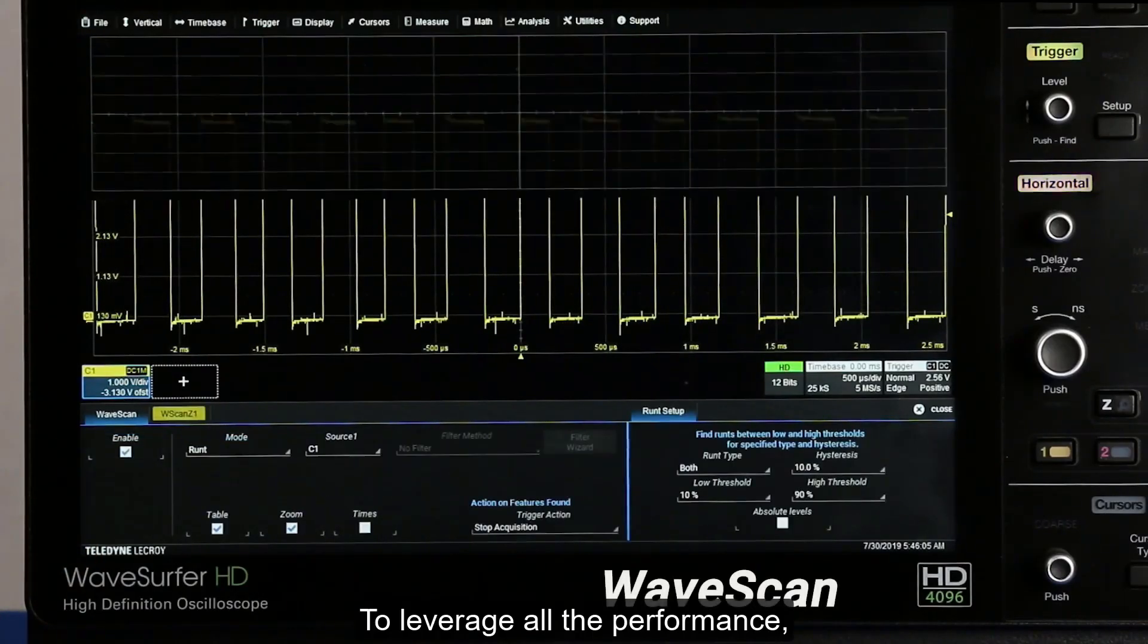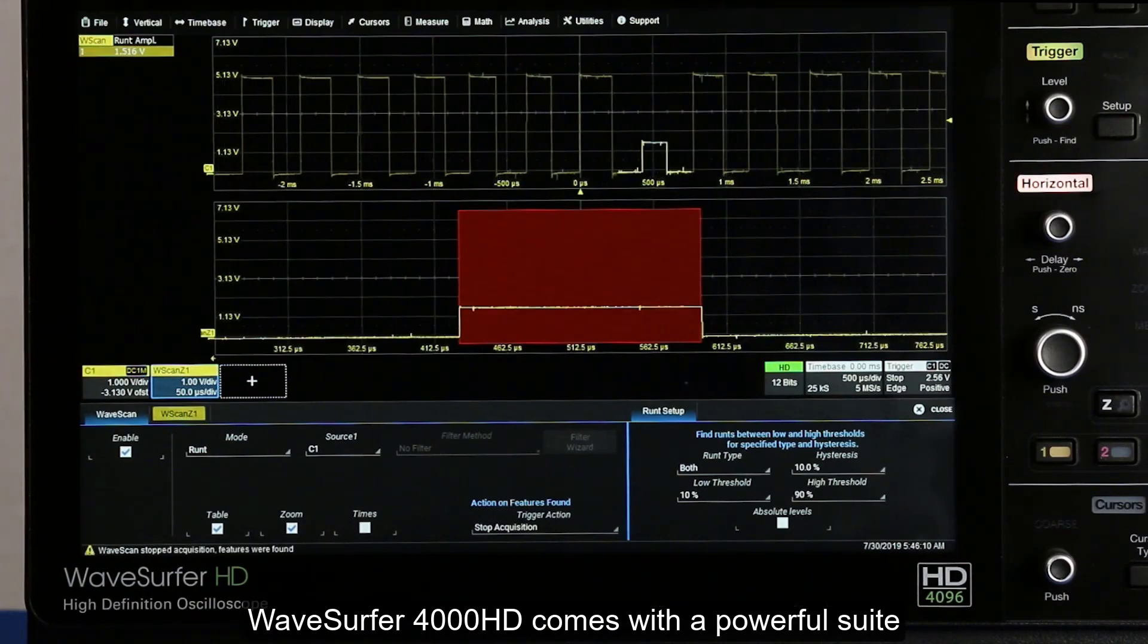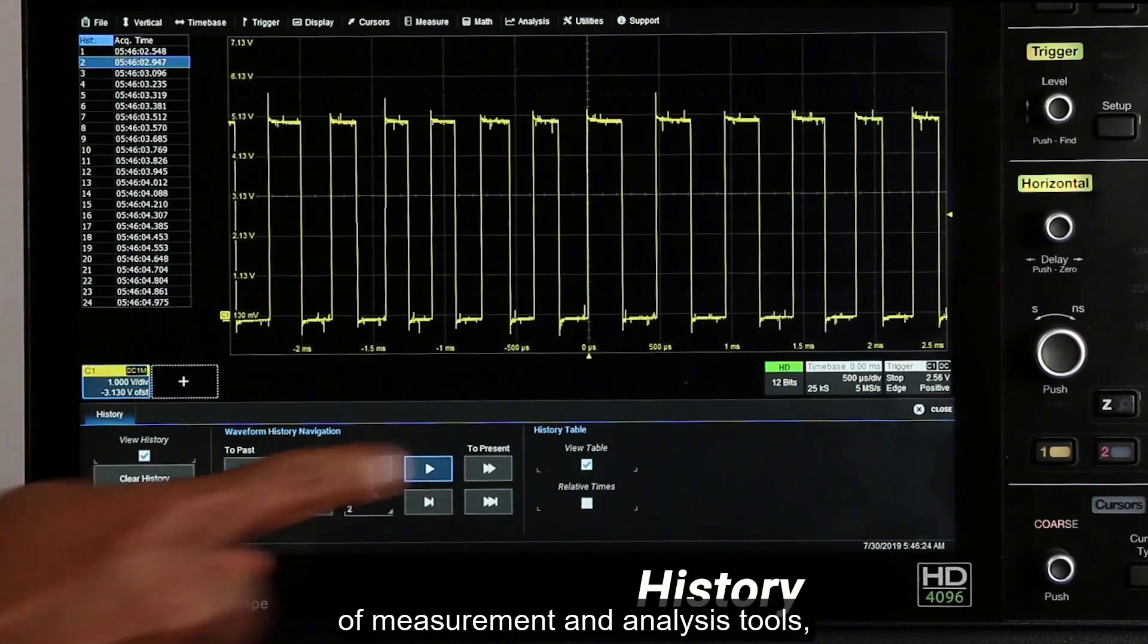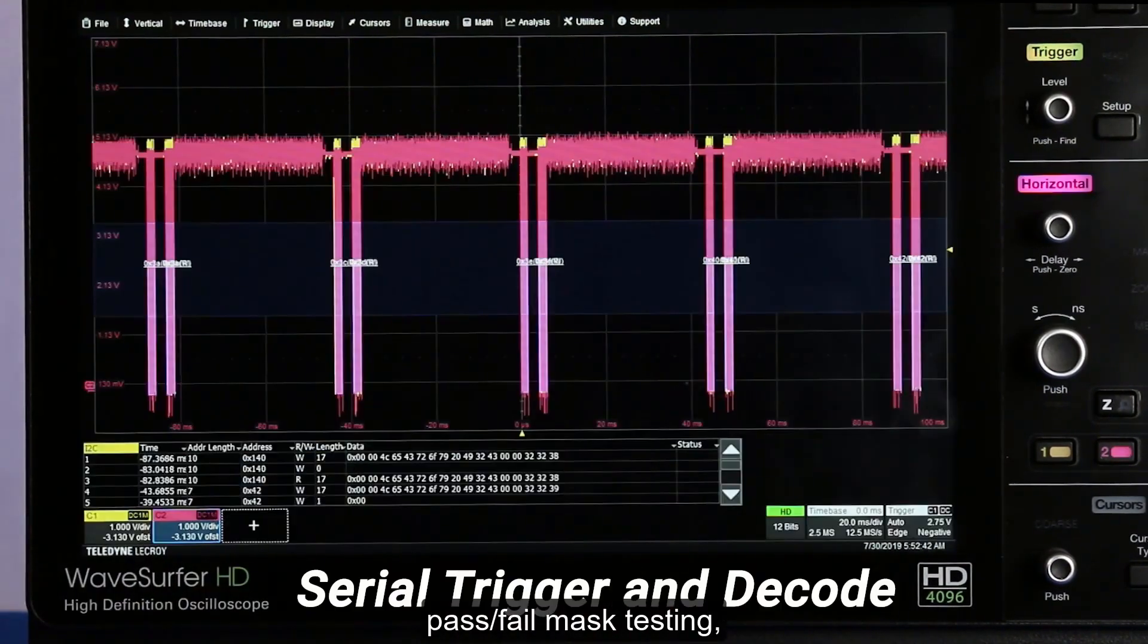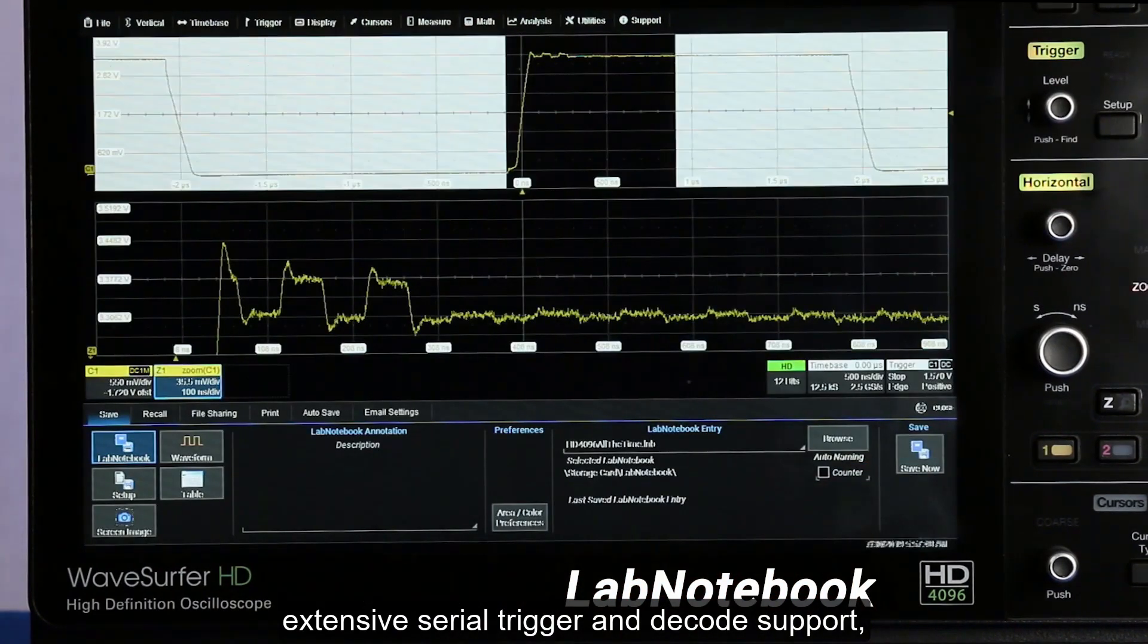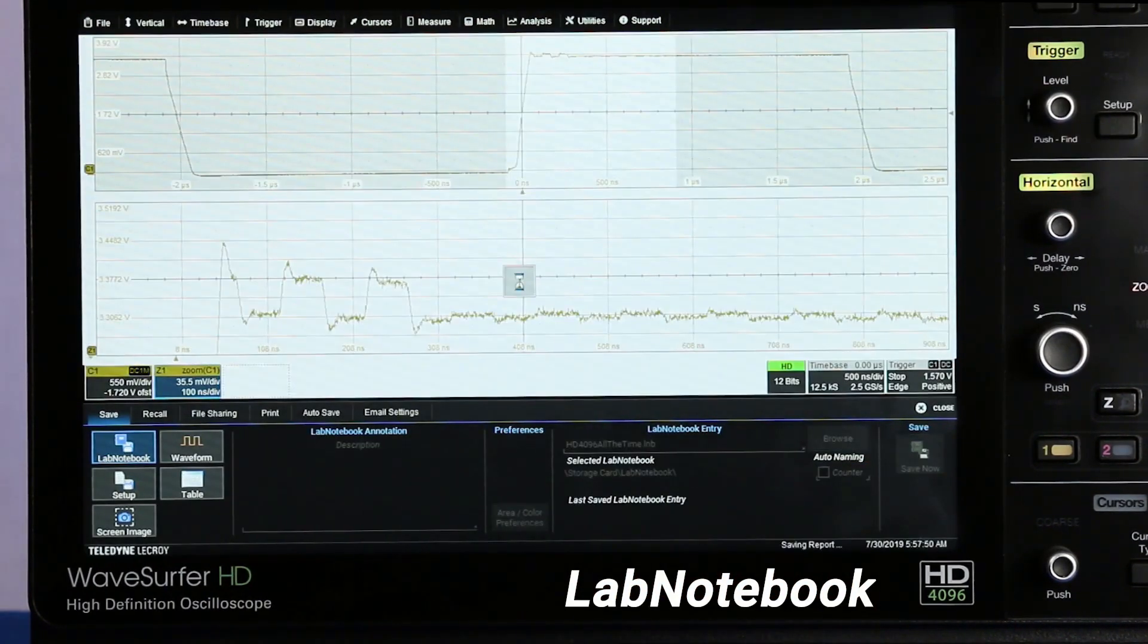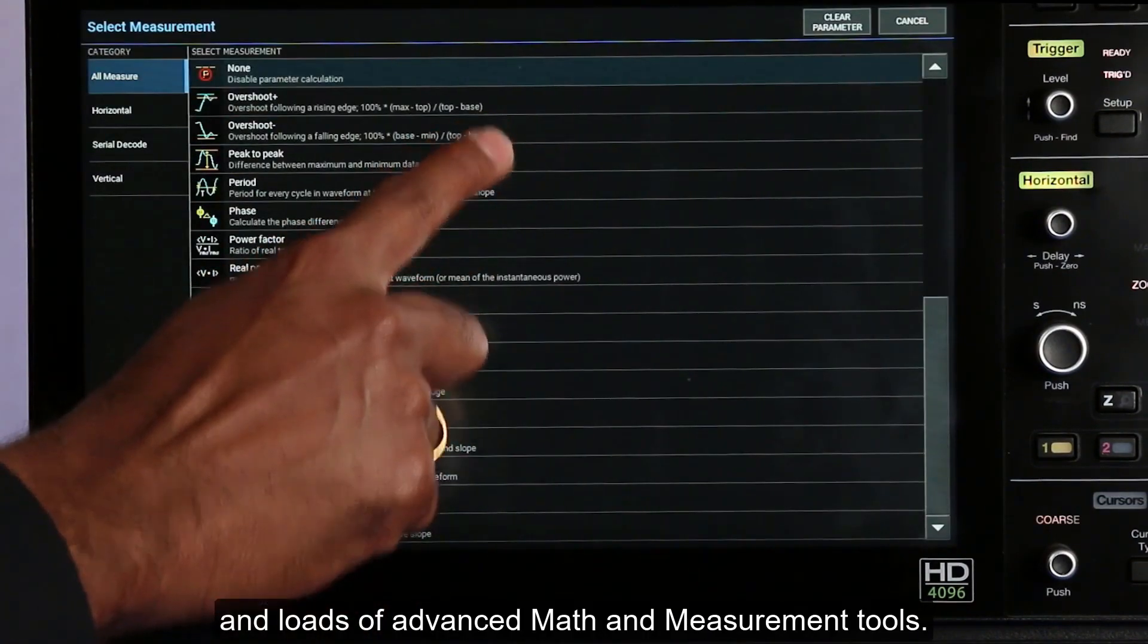To leverage all that performance, WaveSurfer 4000HD comes with a powered suite of measurement and analysis tools including wave scan, history mode, pass-fail mass testing, extensive serial trigger and decode support, sequence mode, lab notebook and loads of advanced math and measurement tools.